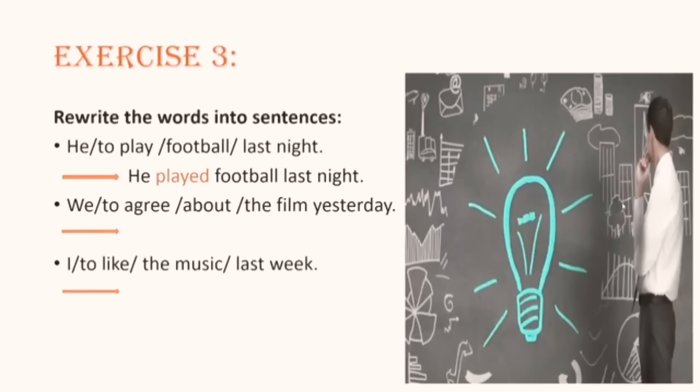So let's see if you can do number two. I know you can do it. Just look at number one and apply the same rule. Are we good? Let's see if you get it right. Here we go. We agreed about the movie. Look at the verb agree. We have an e at the end, so we just add d.